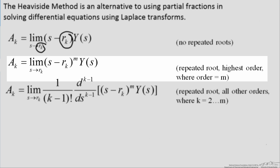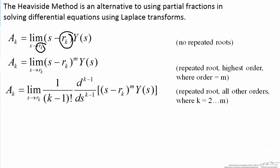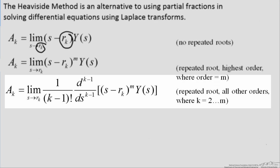The next equation is used for situations where it is a repeated root, and it is the highest order present in the equation. So for example, if you had a denominator of s minus 2 squared, you would use this second equation for the s minus 2 squared numerator. For the s minus 2 numerator, you would use the third equation, which is used for repeated roots where the order is not the maximum order.